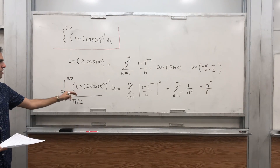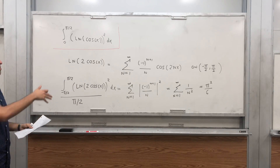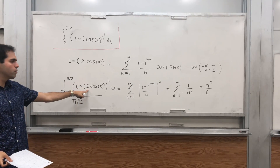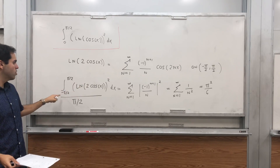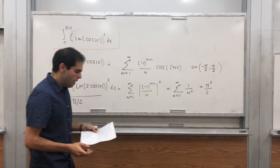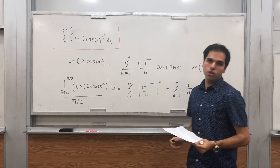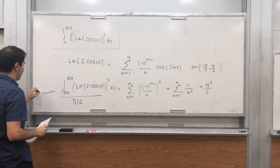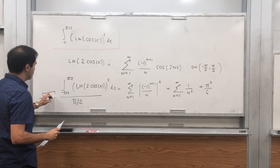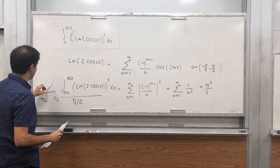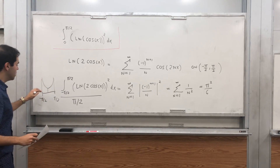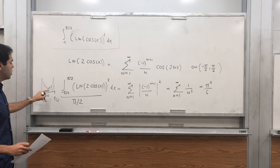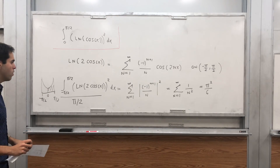We essentially use that identity to find the integral of ln of cosine. We're almost done. The only thing we need to do is get rid of the factor of 2 and handle the lower limit of -π/2. But -π/2 is not a big problem because this is an even function. For an even function, the integral from -π/2 to π/2 equals 2 times the integral from 0 to π/2.